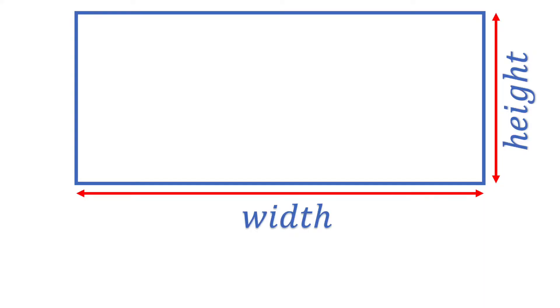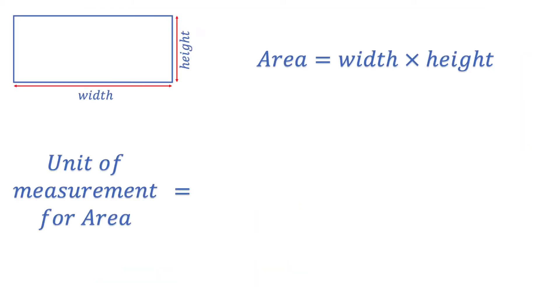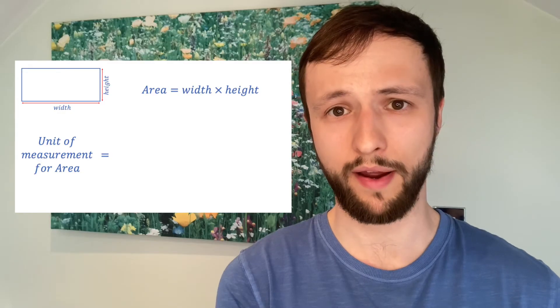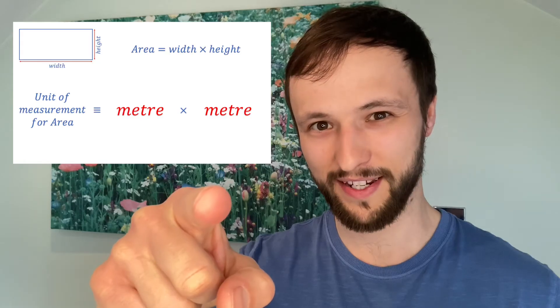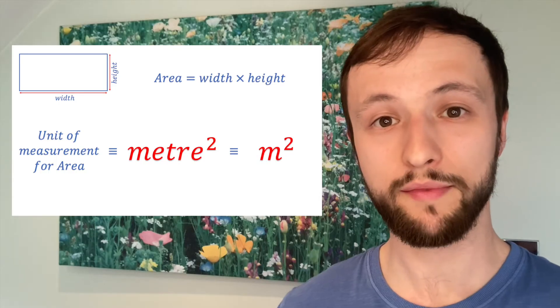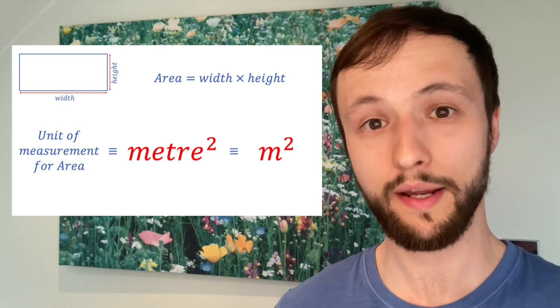The area of a rectangle is equal to the width of the rectangle multiplied by the height of the rectangle. And just like the numbers we might use in this equation, whatever's on the left-hand side must equal whatever's on the right-hand side. This means that our units of measurement for area is equivalent to the units of measurement for width multiplied by the unit of measurement for height. So the unit of measurement for area is meter times meter, meter squared. The units of measurement are combined together just like we combine the numbers together.